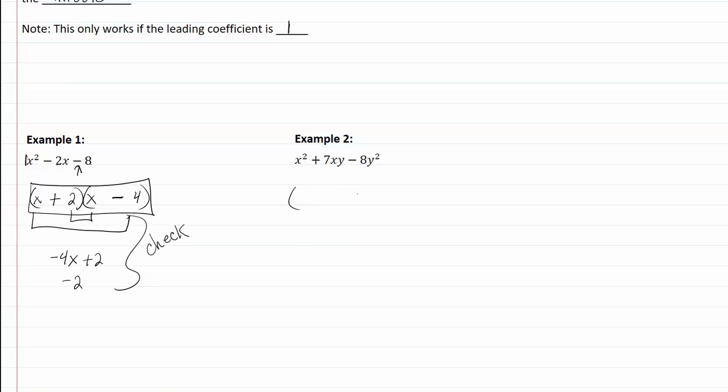If on this one we still have our leading coefficient is one, but notice I have the y involved. So sometimes it's really nice when you have that second variable just to throw it in there at the very beginning so that you don't forget it. My last term is negative, so that means I'm going to be subtracting my factors. So factors of eight that when I take the difference give me seven.